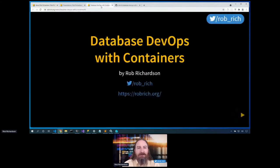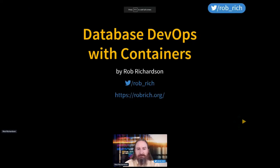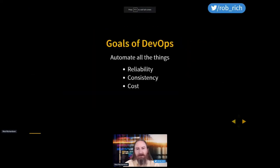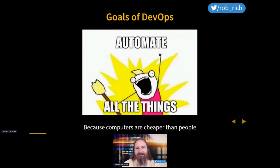Let's dive into database DevOps with containers. With DevOps, our goal is reliability, consistency, and cost. Our mantra: automate all the things. Computers are now cheaper than people, and so if I can get a computer to do it instead of a person, I can probably get the job done easier. That's exactly what DevOps is all about.